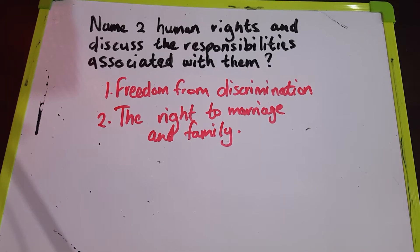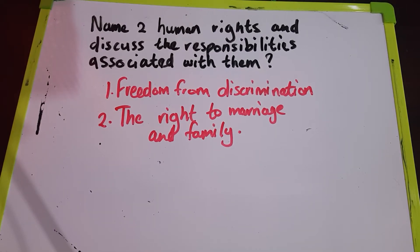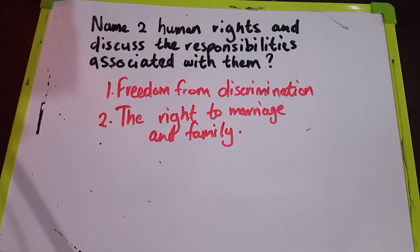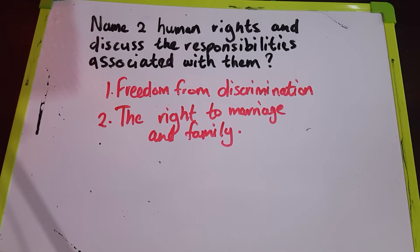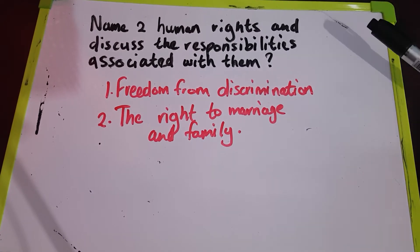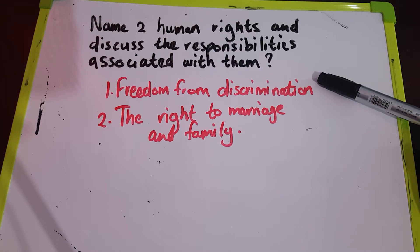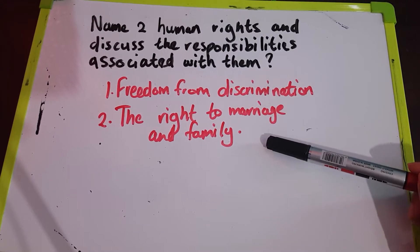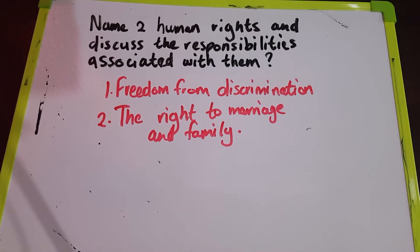The question says: name two human rights and discuss the responsibilities associated with them. The two human rights that we are going to be looking at are, number one, freedom from discrimination, and number two, the right to marriage and family.